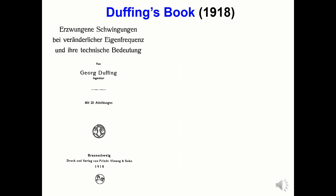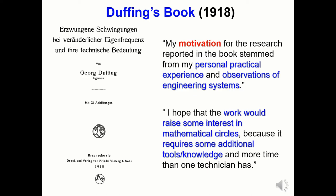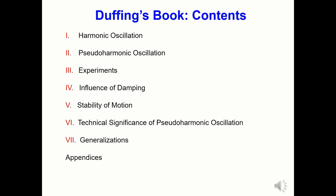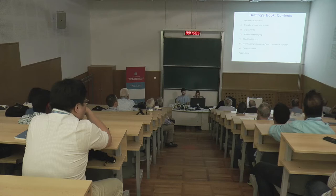Now some details about Duffing's book. We would like to thank Keith and Heather Worden for the partial translation of the book into English. Two general observations can be made: first, that Duffing was motivated by his personal practical experience and observations of engineering systems; and second, that he realized he did not have the necessary mathematical tools to solve all the problems — he was hoping to inspire some mathematicians to develop additional methods. Here is a list of the book's contents — it is 134 pages long with seven chapters covering a variety of topics.